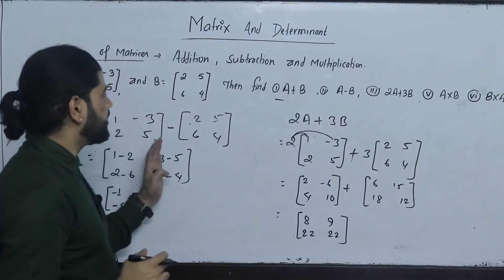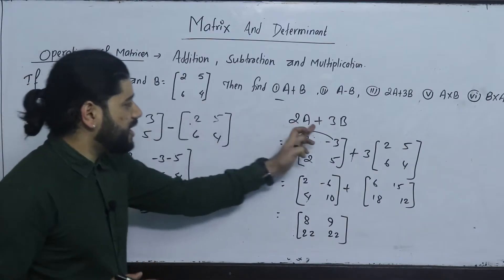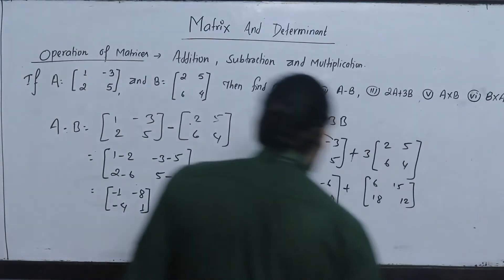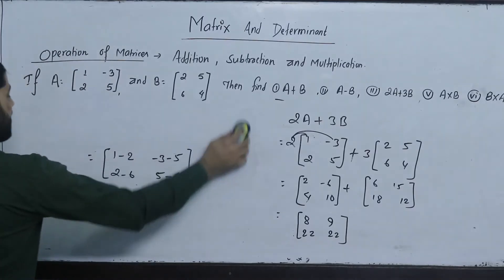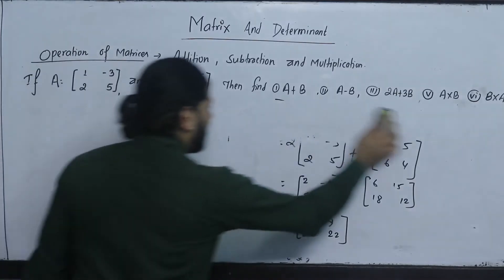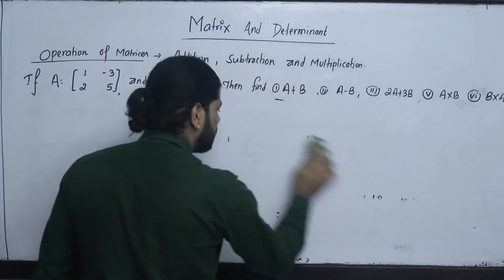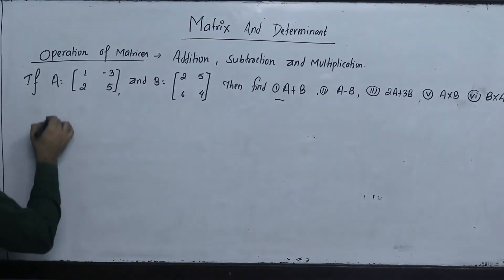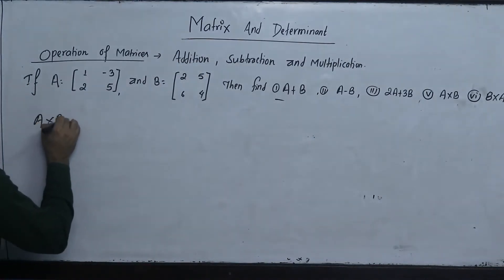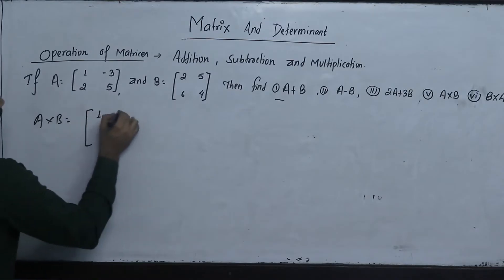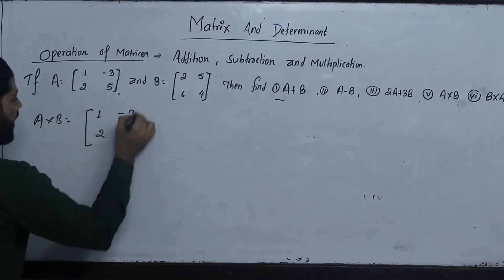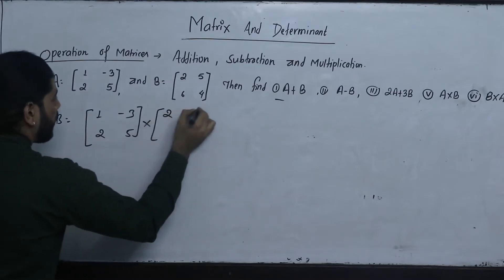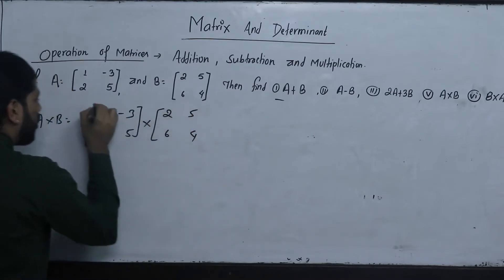Now we will perform matrix multiplication, A into B. A times B means: A is the matrix with elements 1, minus 3, 2, 5, multiplied into matrix B with elements 2, 5, 6, 4.